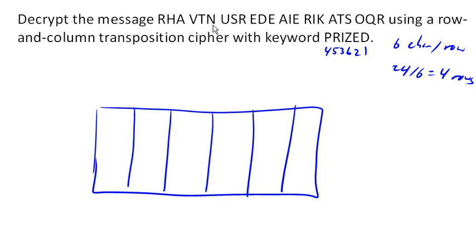So the beginning of the message came from the last column, because that would have been the first one to get read. So we'll write down R, H, A, V in that column. Then the next four letters are going to go in the next column: T, N, U, S. And then we're going to jump to the middle, this third column here, for the next four letters: R, E, D, E.